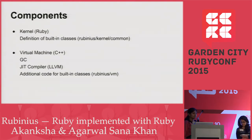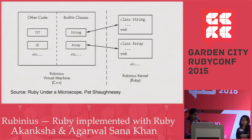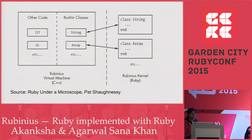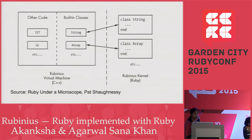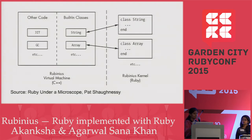For example, there's a string class and some of the methods of the string class cannot be implemented in Ruby, so those methods are kept in the virtual machine. In Rubinius there is a mapping between a Ruby object and a C++ object. Some methods of the string class are in Ruby and the rest, which cannot be implemented, are in C++ inside the VM. There is a one-to-one mapping between the C++ object and the Ruby object, and the rest of the code covers JIT, GC, etc.